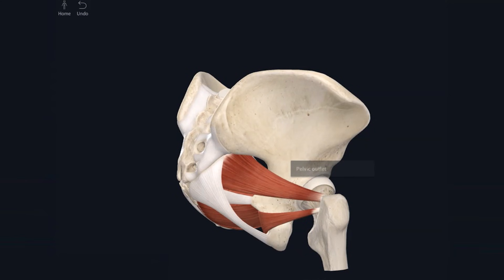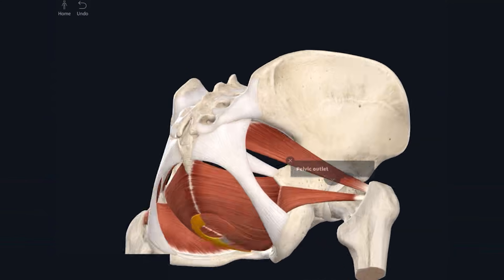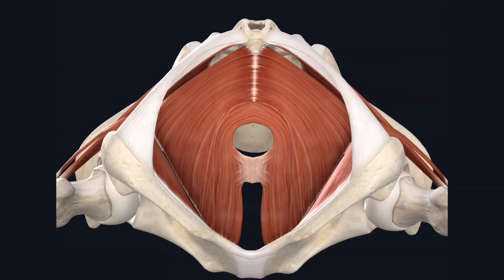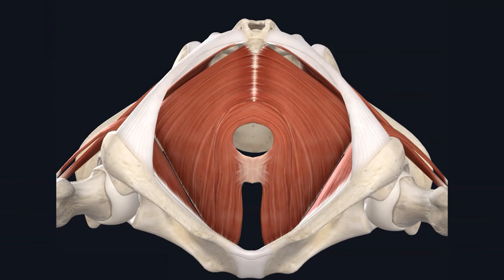I'm going to wrap up by briefly going over how most of the muscles I've described look when we look through the pelvic outlet. The pelvic outlet is a diamond-shaped opening divided into the urogenital and anal triangles. As you can see, this opening is essentially covered completely by the muscles of the pelvic floor — except for two obvious gaps: the urogenital and anal hiatus, which allow for the urethra and anus to leave the pelvis respectively. The vagina also passes through the urogenital hiatus in females.